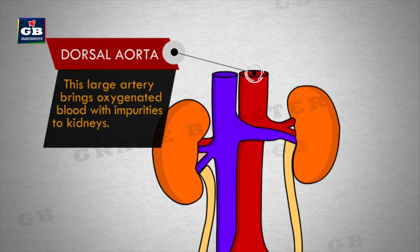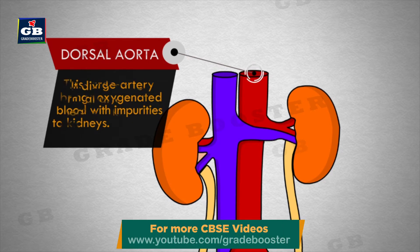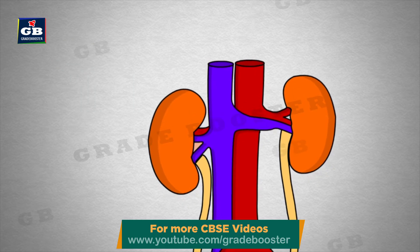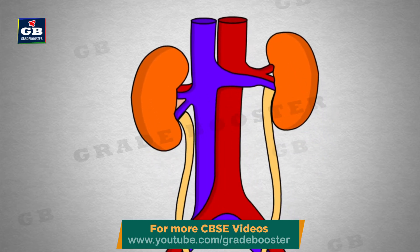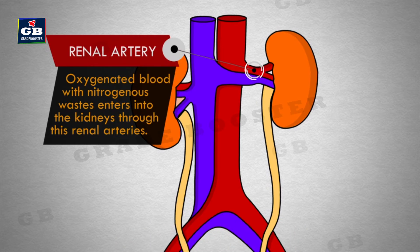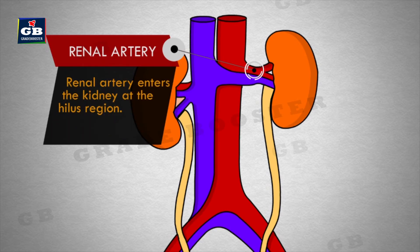This large artery brings oxygenated blood with impurities to the kidneys. It divides into renal arteries near the kidneys. Oxygenated blood with nitrogenous wastes enters into the kidneys through the renal arteries. Renal arteries enter the kidney at the hilus region.